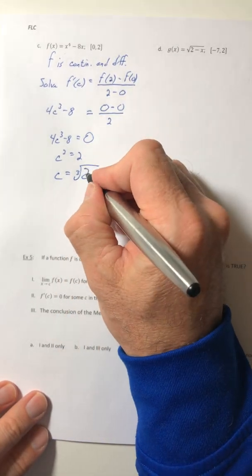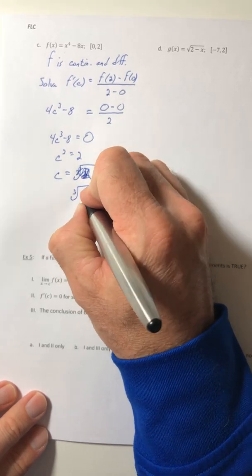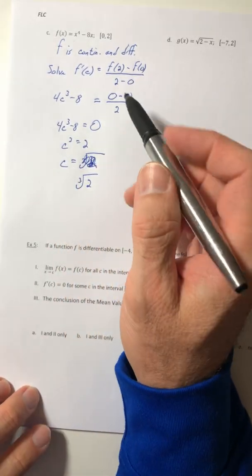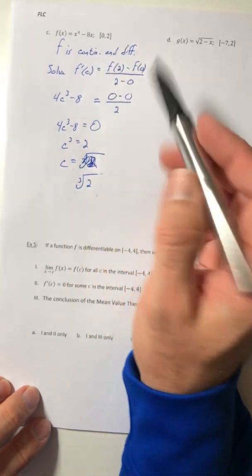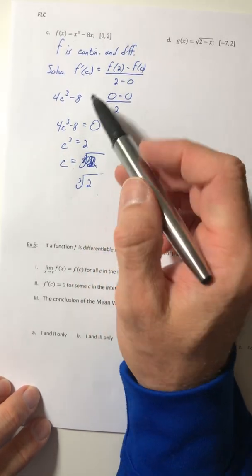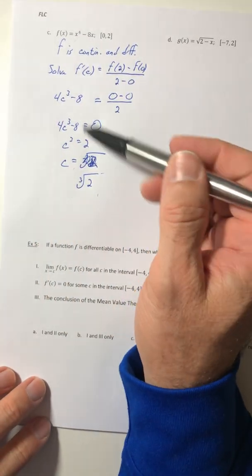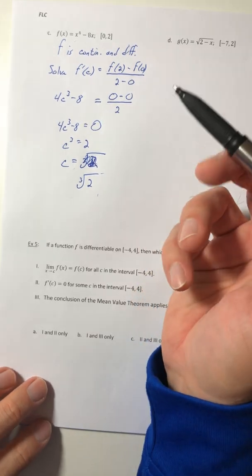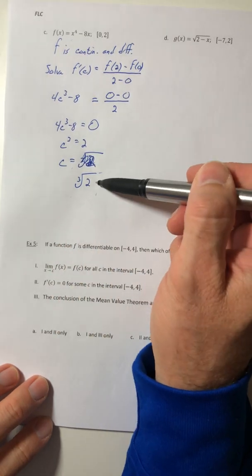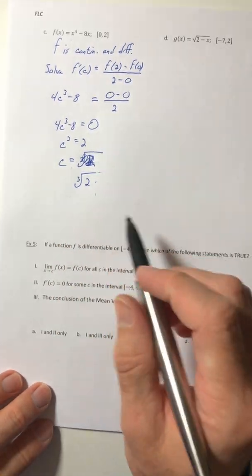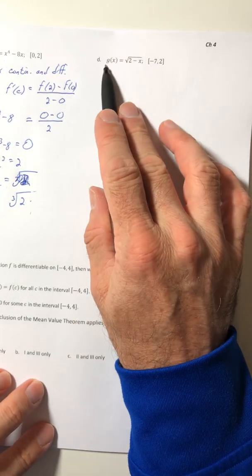So c to the third would equal 2. So c is the cube root of 2. And then just make sure that your answer is in your interval. And this one is. If it's not, then one of two things happen. Either you can't actually apply it and you thought you could, or somewhere you made a mistake in your solution. But if you can apply the theorem, there has to be at least one answer. There might be more, but you have to have at least one solution in this interval. All right. Part D.